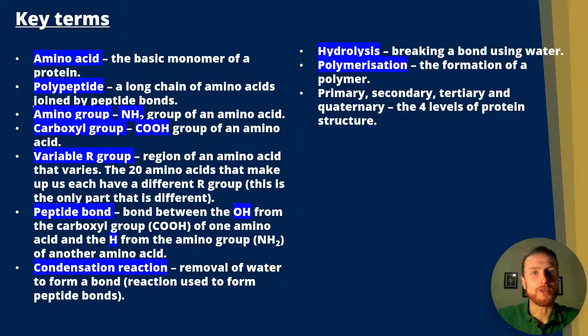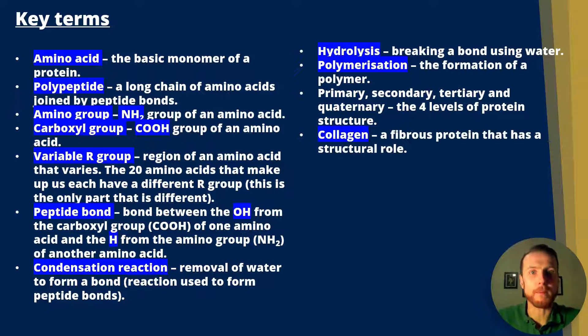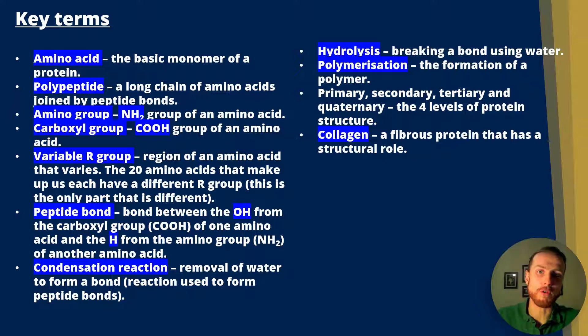The primary, secondary, tertiary, and quaternary structures are the four levels of protein structure. Collagen is a fibrous protein that has a structural role. Globular proteins carry out metabolic functions and include enzymes such as amylase, but molecules such as hemoglobin are also globular proteins.